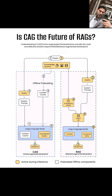So, why might CAG be the future of RAG, or at least a valuable alternative? Cost-effectiveness: by preloading and caching relevant context, CAG can significantly reduce the computational cost associated with real-time embedding generation and vector database lookups during inference. Speed: accessing information from a cache is generally much faster than performing a vector search, potentially leading to quicker response times. Scalability: for scenarios with recurring information needs or predictable query patterns, CAG could offer a more scalable solution by reducing the load on the embedding model and vector database during peak usage.